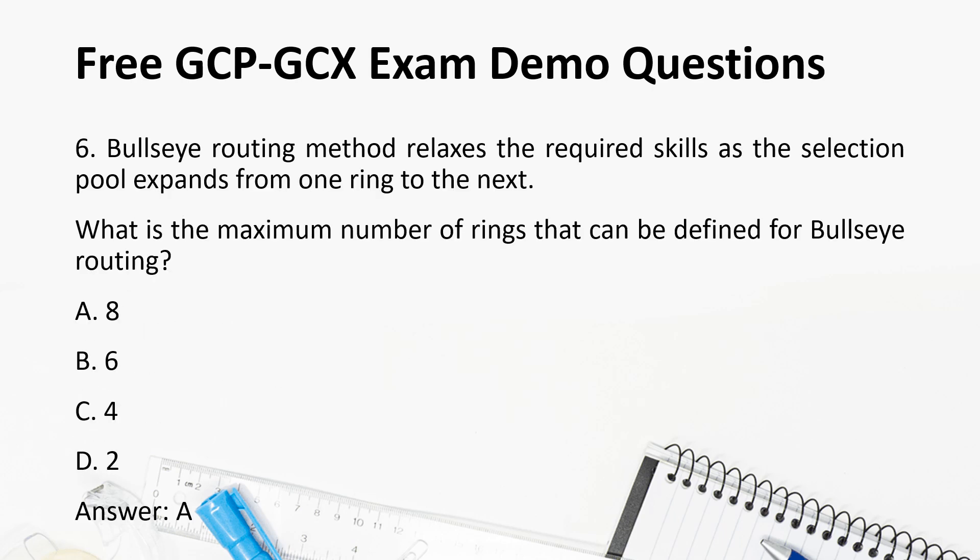Question 6: Bullseye routing method relaxes the required skills as the selection pool expands from one ring to the next. What is the maximum number of rings that can be defined for bullseye routing? a. 8, b. 6, c. 4, d. 2. Answer: a. 8.